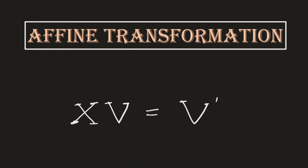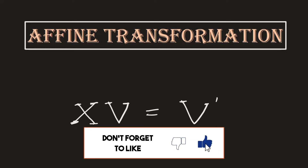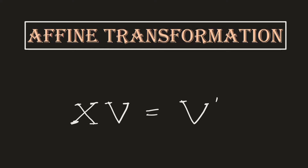Welcome to this lecture on affine transformation, a very important topic to understand before covering upcoming topics like eigenvectors and eigenvalues. Affine transformation is the transformation of a vector or matrix from one state to another state after being multiplied with a matrix. If we multiply a matrix with a vector, this vector can be transformed into a new form. We'll consider a vector for simplicity and explore this transformation further.